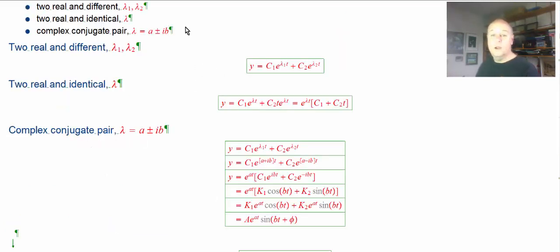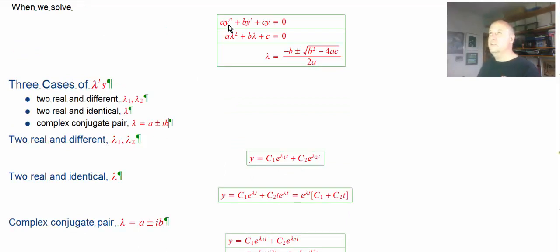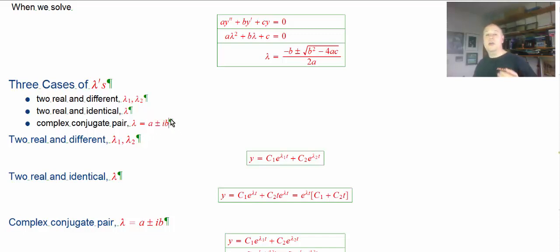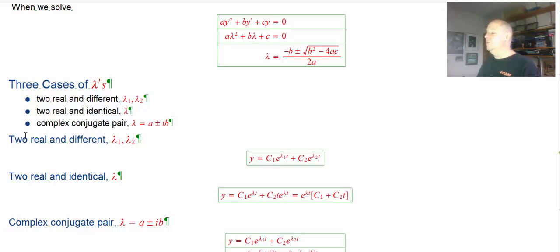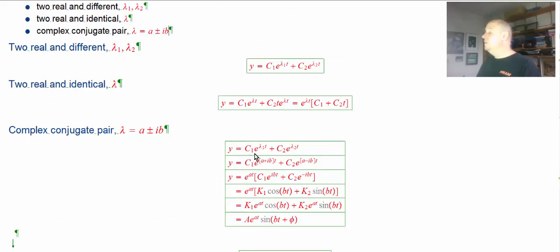So we're at the stage where we've got our second-order linear constant coefficient homogeneous differential equation. We've got the eigenvalues — we couldn't factor, so we used the quadratic formula and got λ = A ± iB. What do we do? Well, if I follow along: A + iB and A − iB are different, so I'll do the same thing as real and different. λ₁ is with the plus and λ₂ with the minus, and I take a linear combination of e^(λ₁t) and e^(λ₂t).